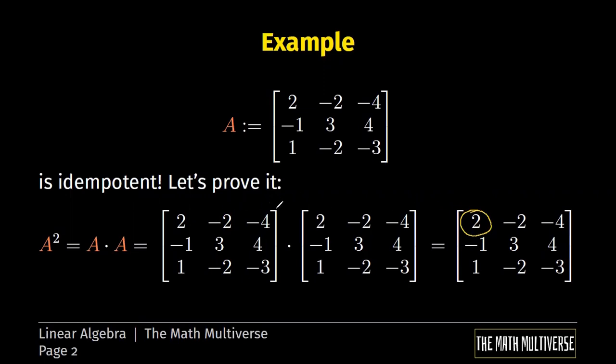We take the first row of the left matrix and the first column of the right matrix. Then we perform the following operations. It will be 2 times 2 plus minus 2 times minus 1 plus minus 4 times 1. And at the end, we obtain exactly the number 2.